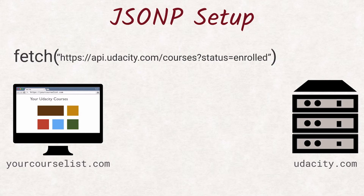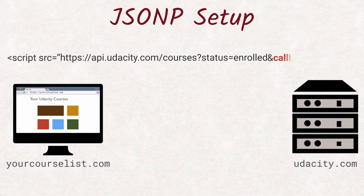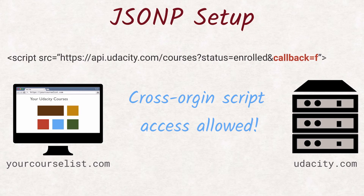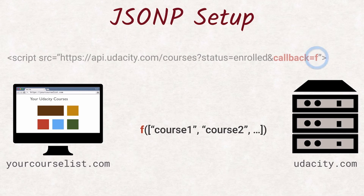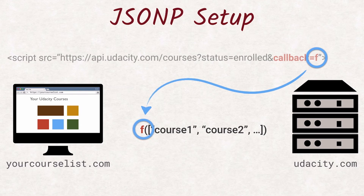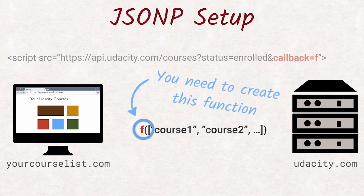How would this API look if it supports JSONP? Add a function name to the URL and include it with a script tag. The server will wrap all the data it means to return in a function call with the same name as given via the query parameter. You need to define this function because when the response is returned, the function call is executed and you now have access to the data via the parameter of that function.